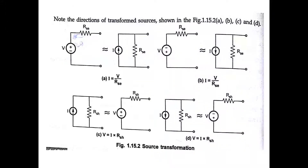This confirms the conversion: for a voltage source to current source conversion, the current I equals V divided by RSC, with RSH equal to RSC. For a current source to voltage source conversion, the voltage V equals I multiplied by RSH, with internal resistance RSC equal to RSH. So the only conversions are: current equals V divided by RSC, and voltage equals I multiplied by RSH. The voltage source is in series with internal resistance RSC; the current source is in parallel with RSH.